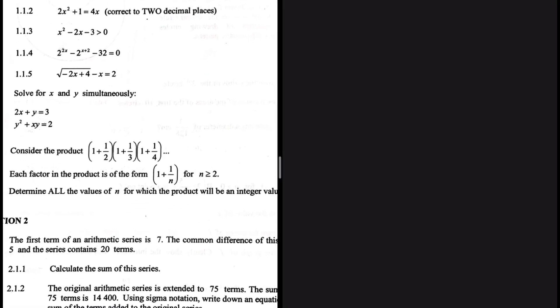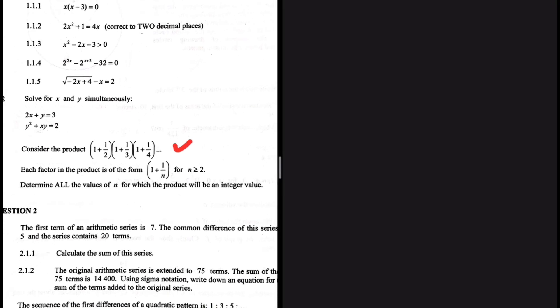1.3 is a thing of beauty and let me show you why that is the case. So consider the product 1 plus 1 over 2 multiplied by 1 plus 1 over 3 and lastly multiplied by 1 plus 1 over 4, so on and so on. Each factor in the product is of the form 1 plus 1 over n for which n is greater or equals to 2 as we can clearly see from the first term that that is the case.